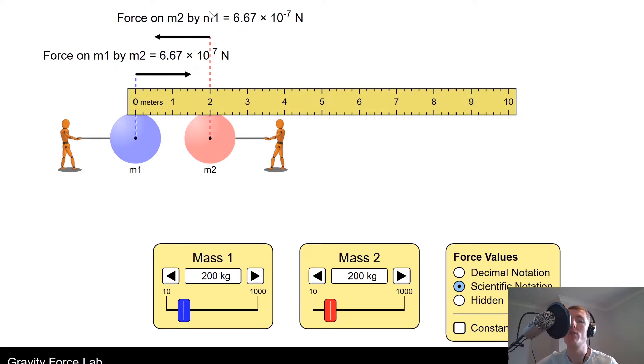You'll see the forces of each object there. So you've got force on mass m1 by mass m2, and the force on mass m2 by mass m1. Right now we've got a value of 6.67 times 10 to the minus 7 newtons for both gravitational forces.